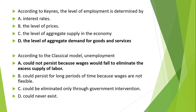According to the classical model, unemployment could not persist because wages could fall to eliminate the excess supply of labour. When wages are reduced, firms will hire more labour, clearing the labour market. Option A is the correct option.